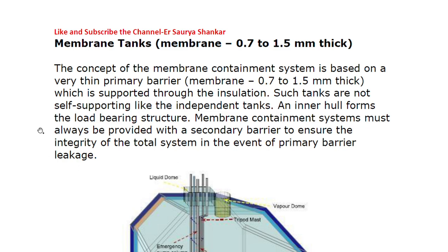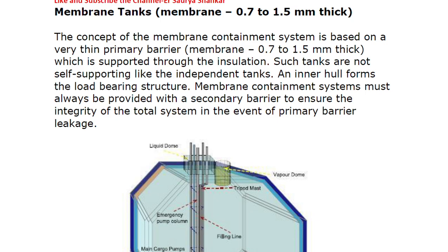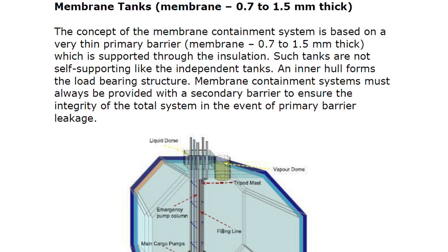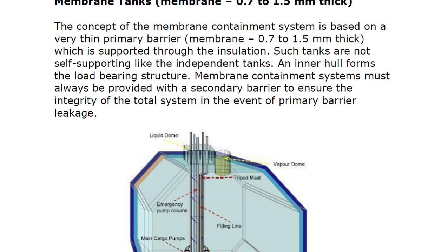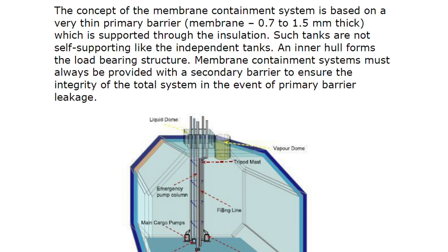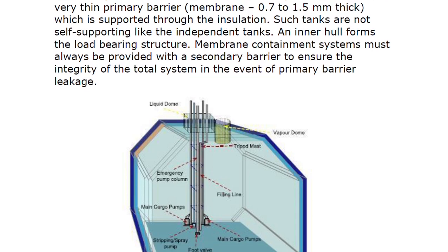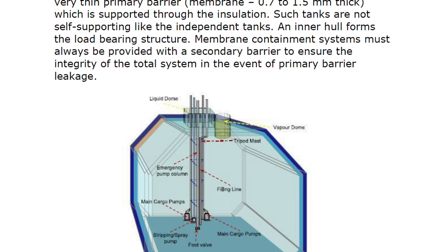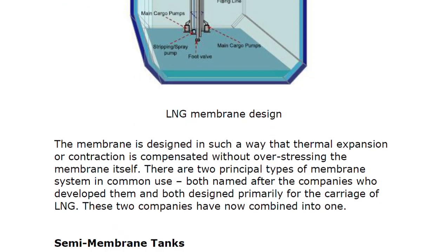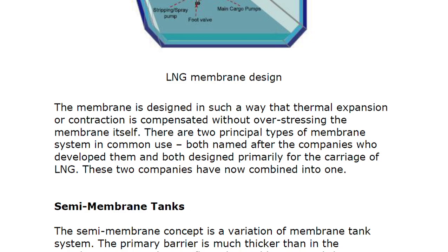Membrane tanks have a very thin primary barrier membrane of 0.7 to 1.5 mm thickness, supported through insulation. Such tanks are not self-supporting like independent tanks; the inner hull forms the load-bearing structure. Membrane containment systems must always be provided with a secondary barrier - unlike independent tanks where it may or may not be present - to ensure integrity of the total system in the event of primary barrier leakage. The membrane is designed so that thermal expansion and contraction is compensated without over-stressing the membrane itself. There are two principal types of membrane system in common use, both named after the companies that developed them, both designed primarily for carriage of LNG.